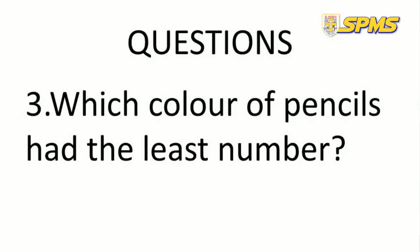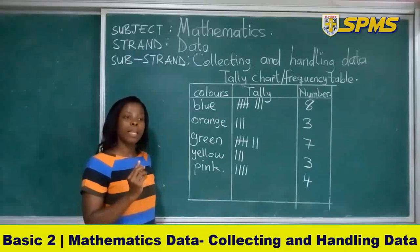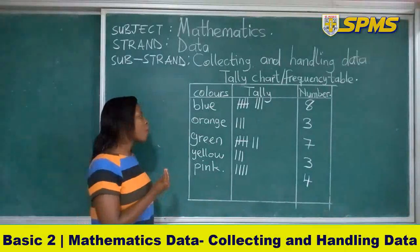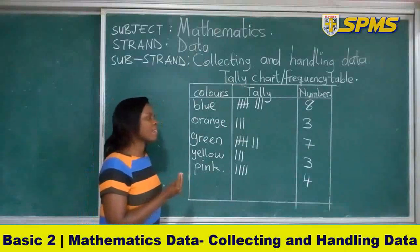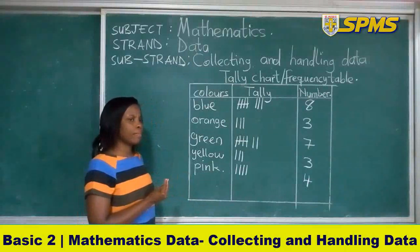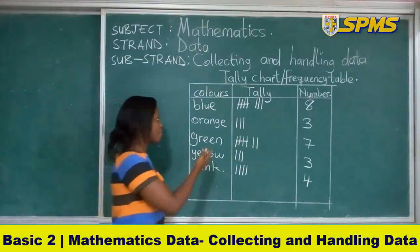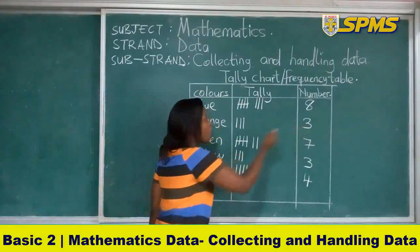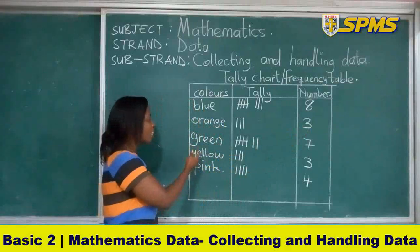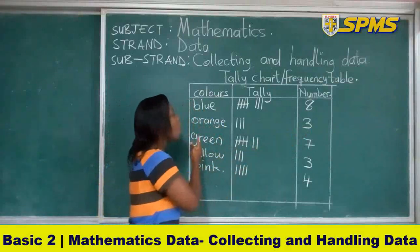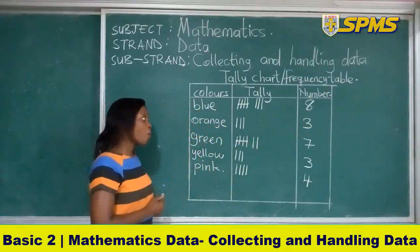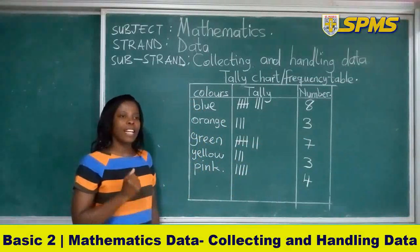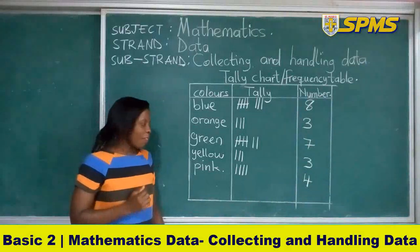Number 3: Which color of pencils had the least number? Anytime you say least, that means something that is small. So the colors of pencils that had the least numbers — yellow is 3 and orange is also 3. So orange and yellow had the least number of pencils.